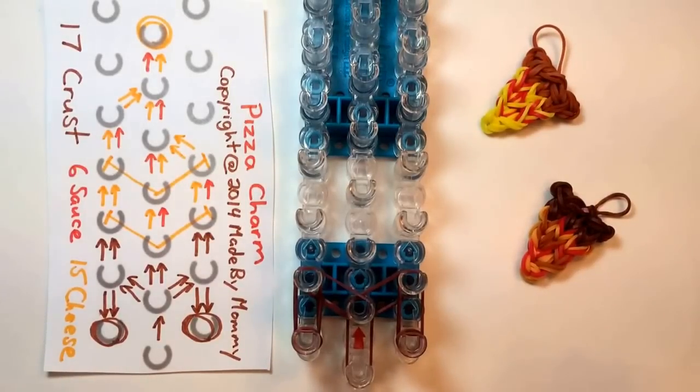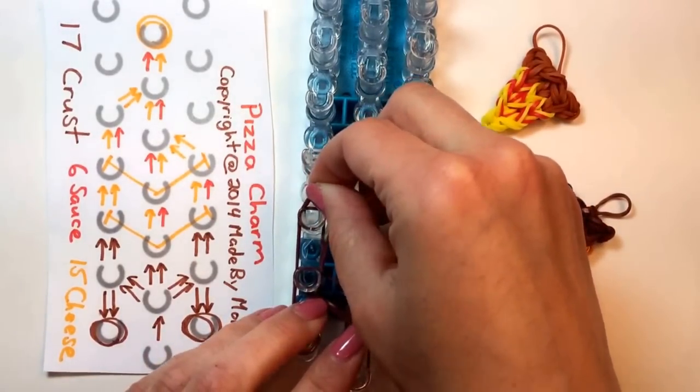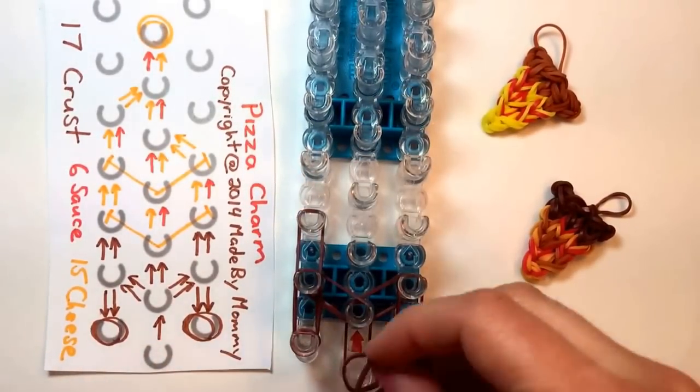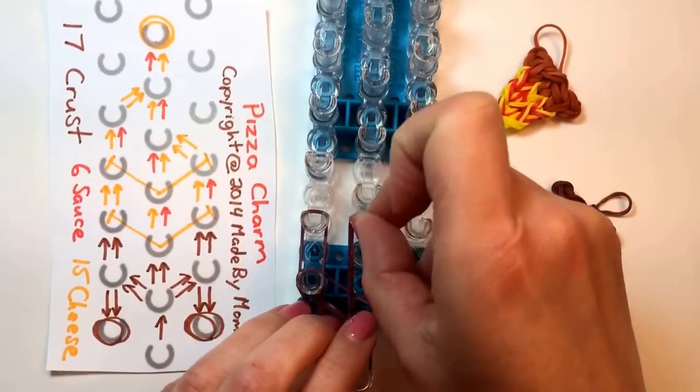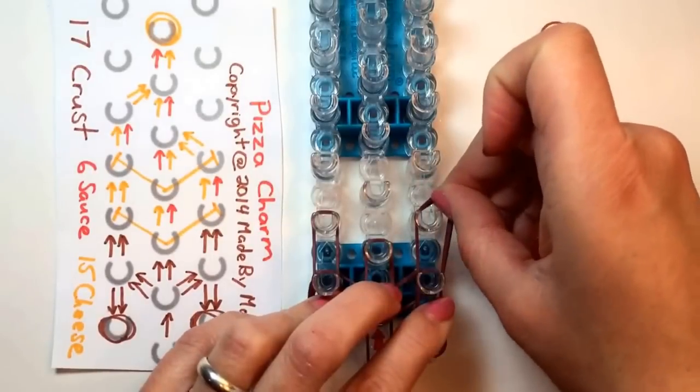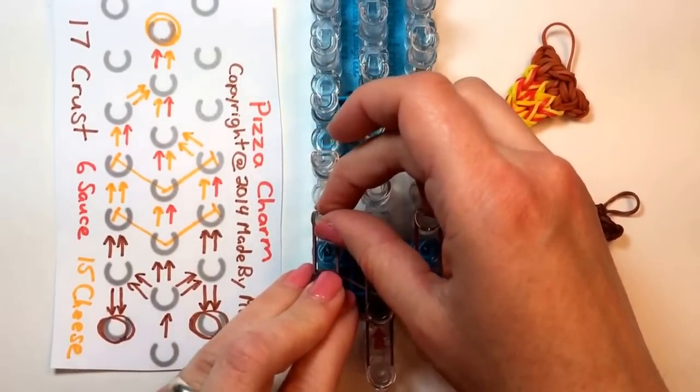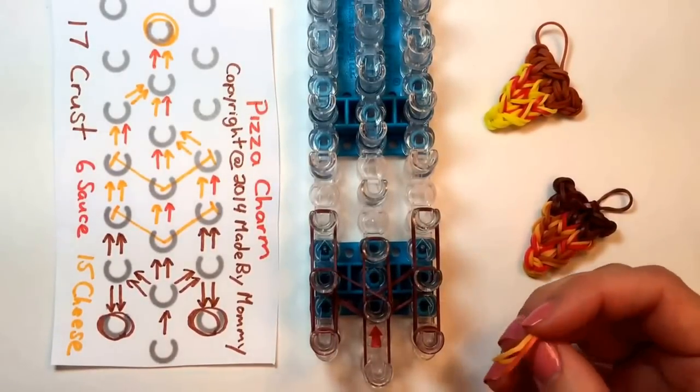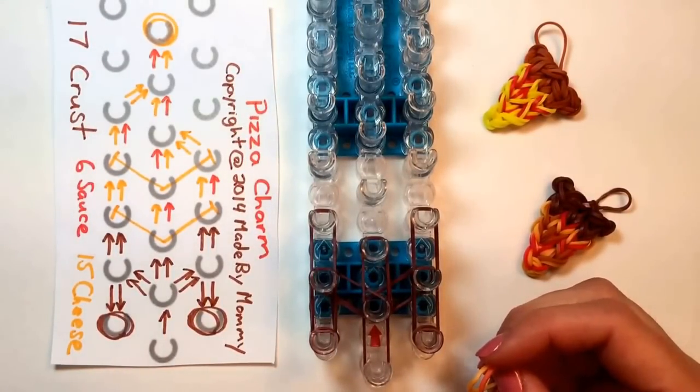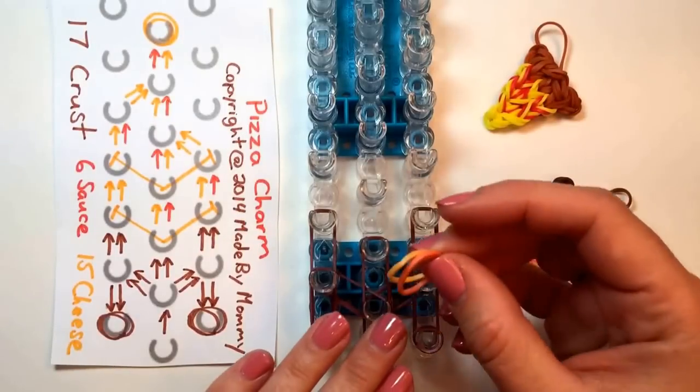So once you have those placed, we're going to take two more on that crust color and we go from left to right now for each of these. And I must say, as I make my pizza charm, that I need to give credit to a girl named Zara, who lives in my neighborhood, is friends with my daughter, and showed me a pizza charm a few weeks ago. I loved her idea and so I've been working on getting the design exactly right. So thank you, Zara, for that inspiration.